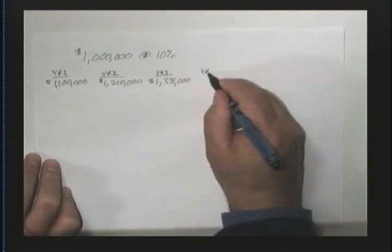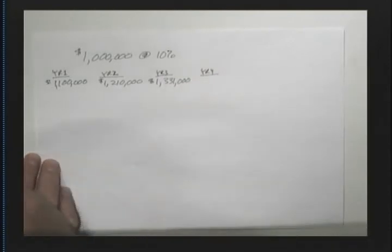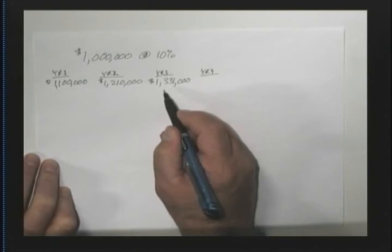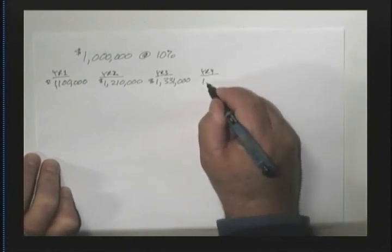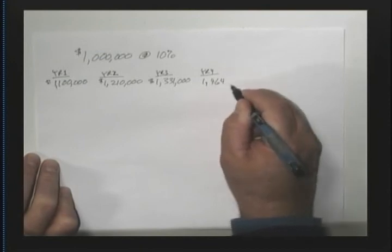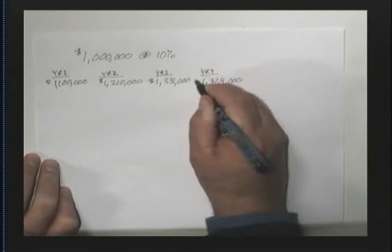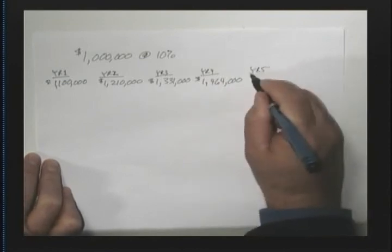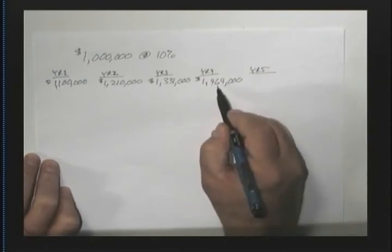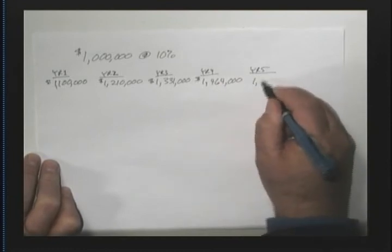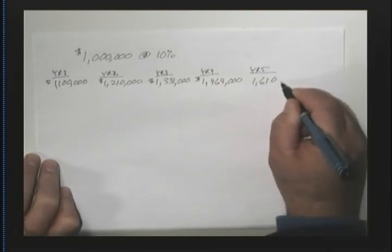At the end of year four, again, 10% of this number added back to it works out to be $1.46 million. And at the end of year five, 10% of this added back to it works out to be just over $1.6 million.